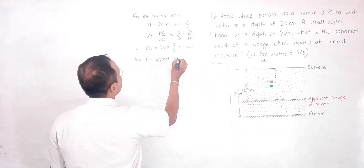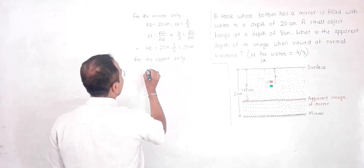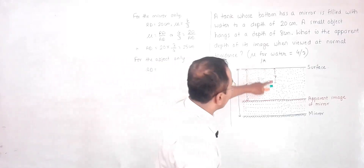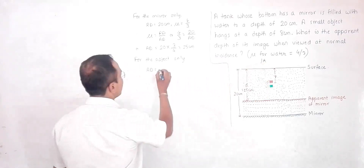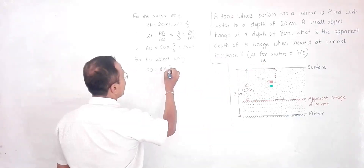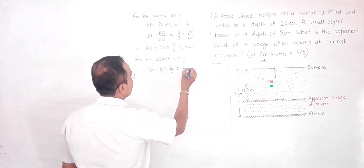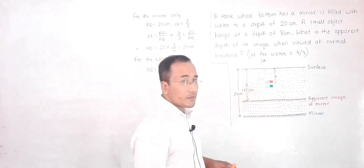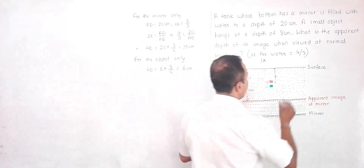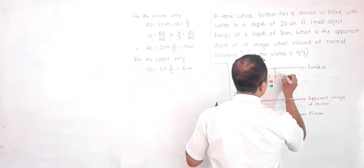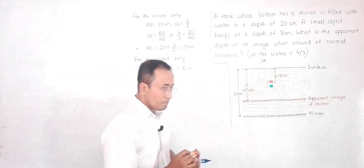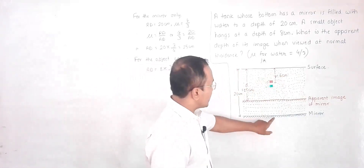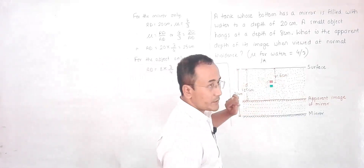Similarly, for the object only: the real depth is 8 centimeters, so the apparent depth = 8 × 3/4 = 6 centimeters. So the object will appear to be at a depth of 6 centimeters — this distance Y equals 6 centimeters.